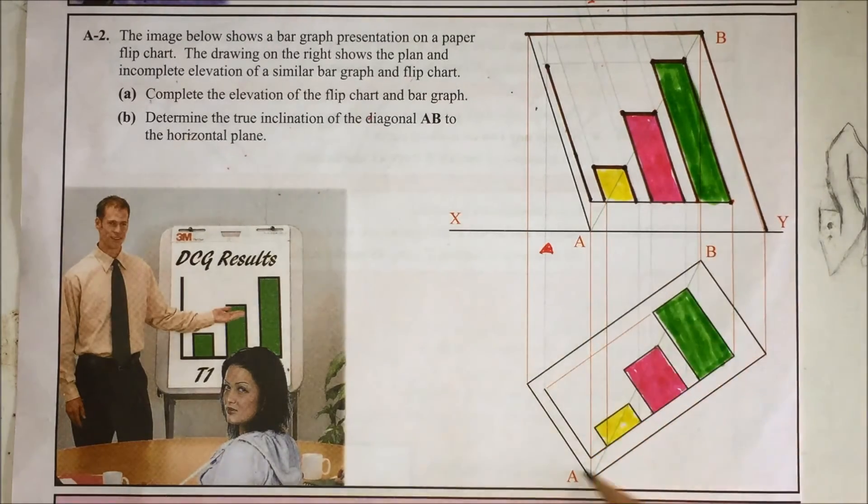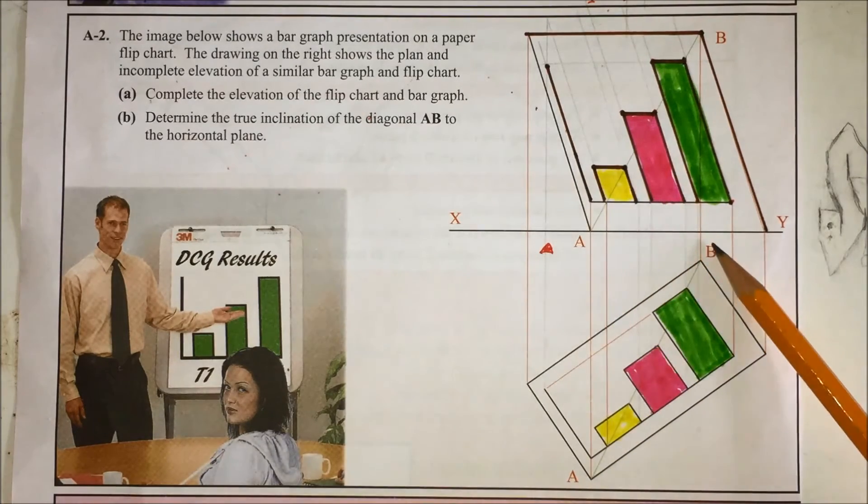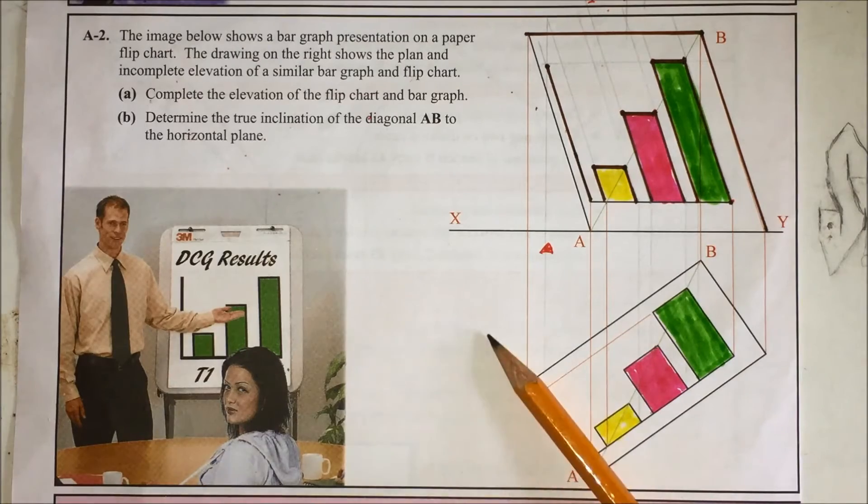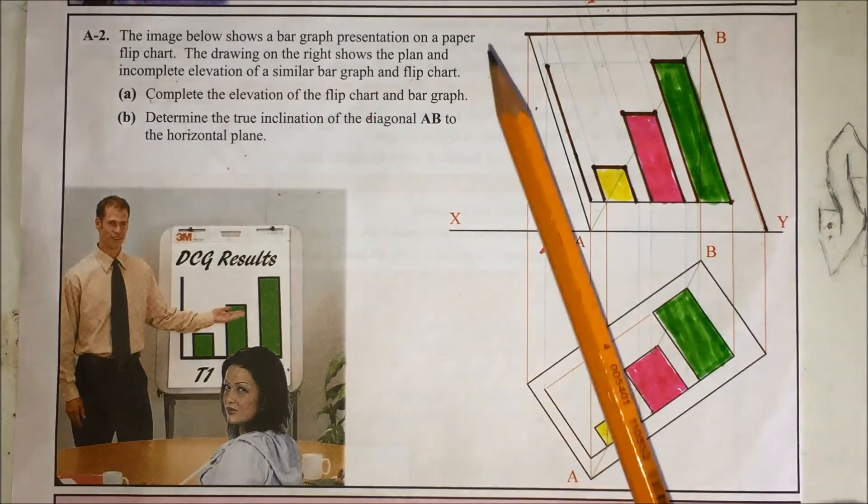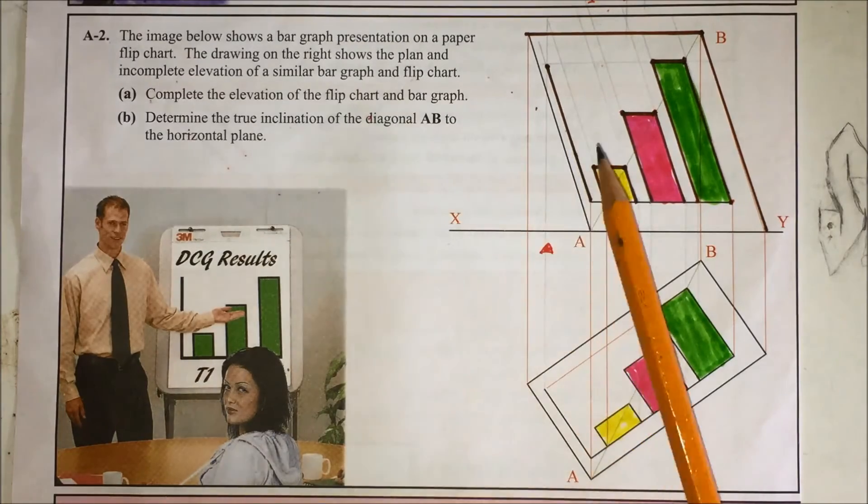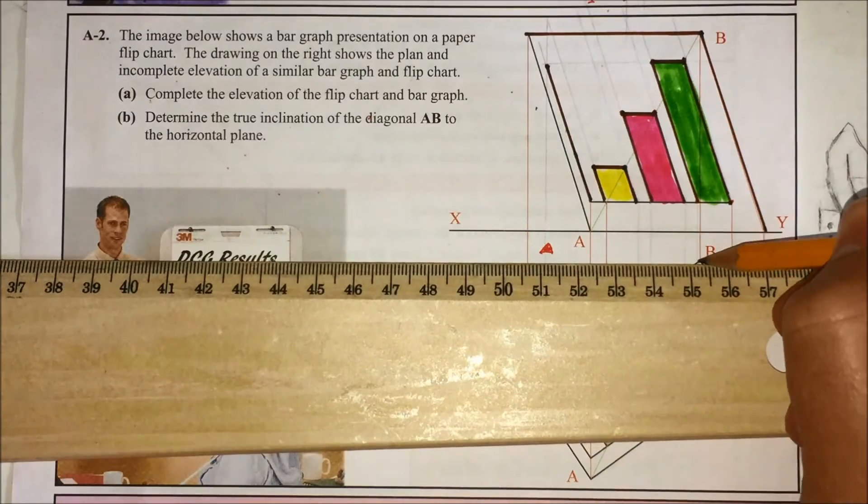So in order for it to be a true angle up here in the elevation, we need to rotate AB around to be parallel to XY line. Because if it's parallel to XY line in plan and be true length in elevation, now if it's true length in elevation then that means you can get the true inclination. So what I need to do is bring a line out here from B.